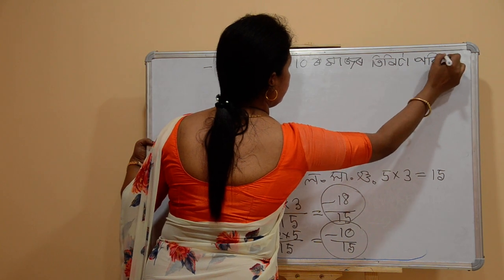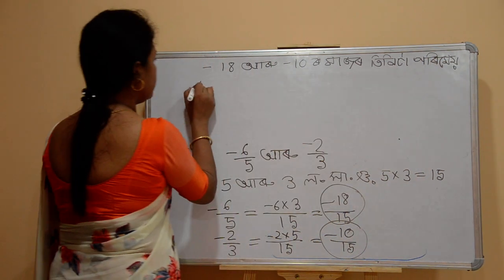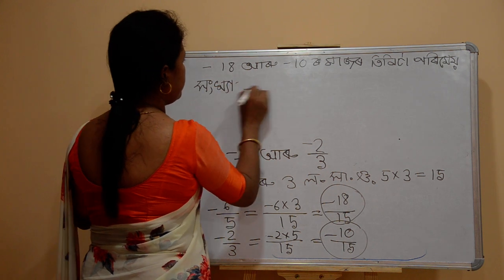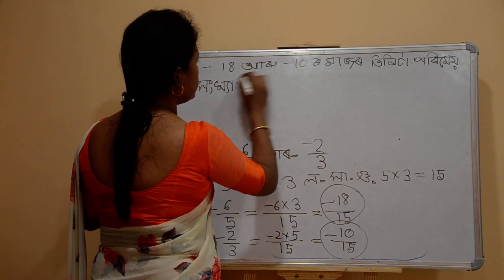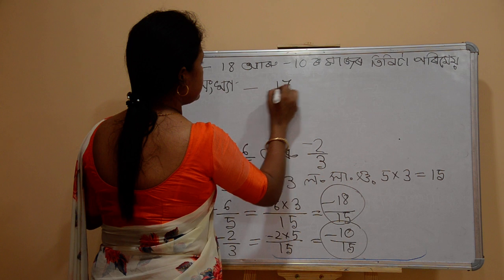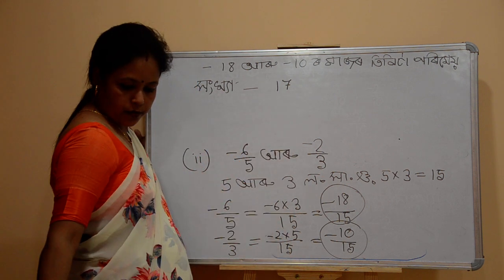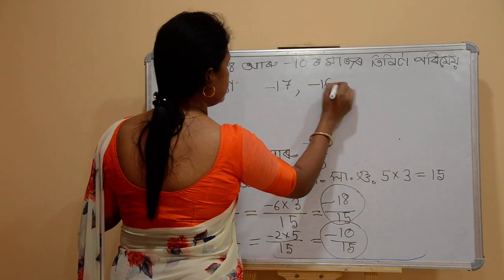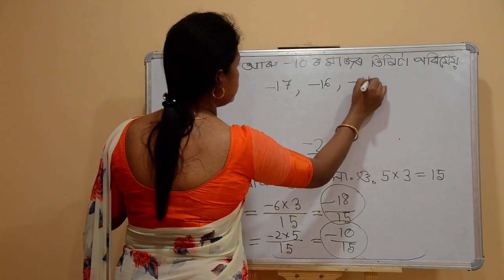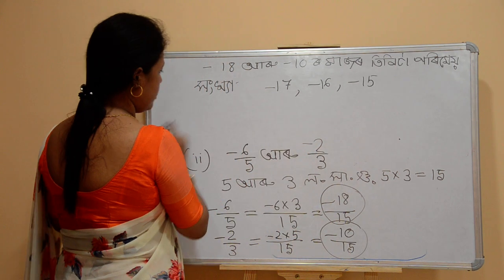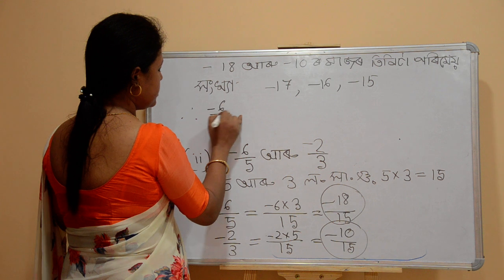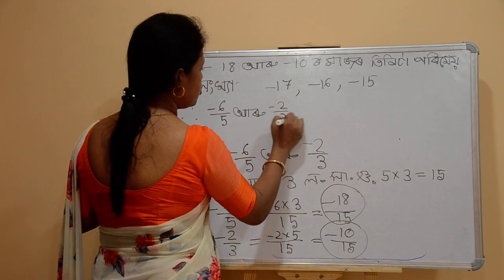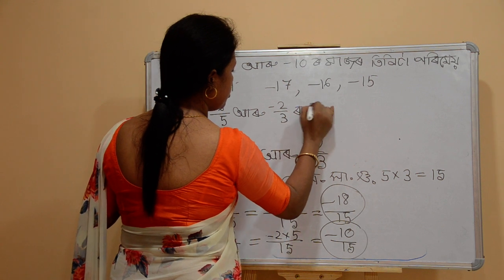We are going to see this: minus 18, minus 17, minus 16, minus 15 — minus 6 by 5, minus 6 by 3, minus 2 by 3.